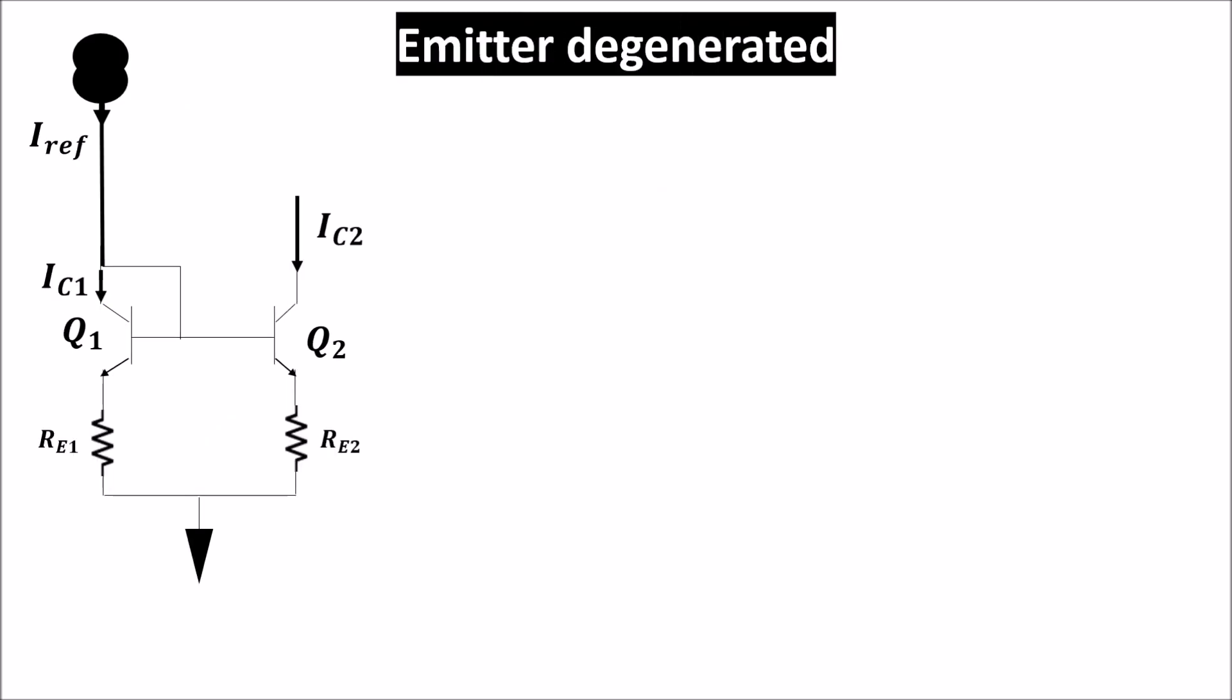A classical way to cope with stability like thermal instability is creating a negative feedback by putting two emitter resistors. In this configuration, a stable reference current biases Q1, creating a V_BE1 and a drop on R_E1.